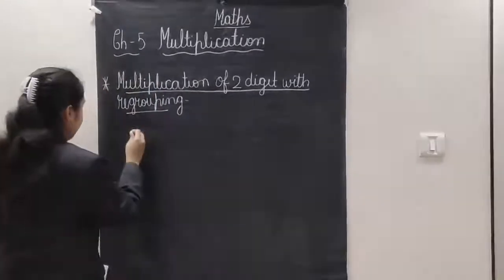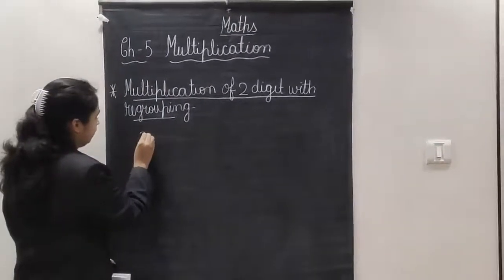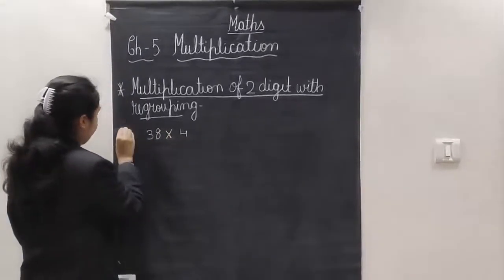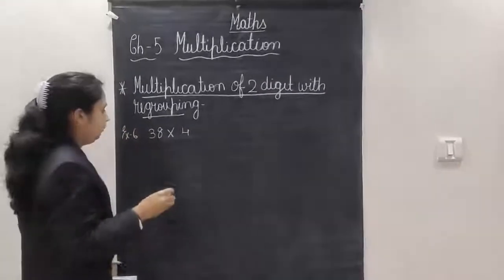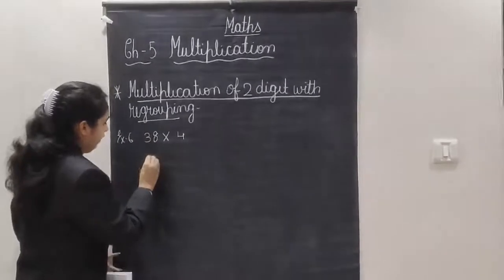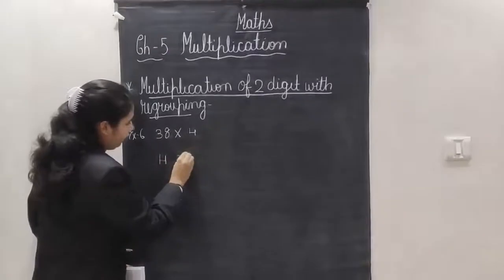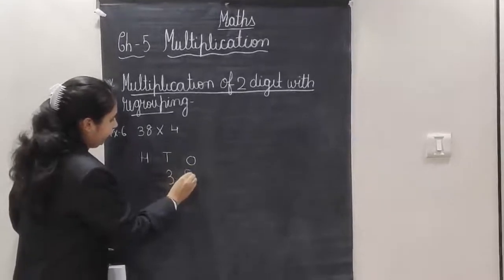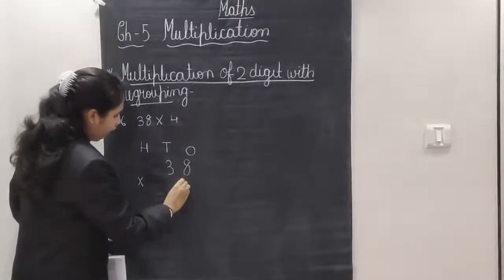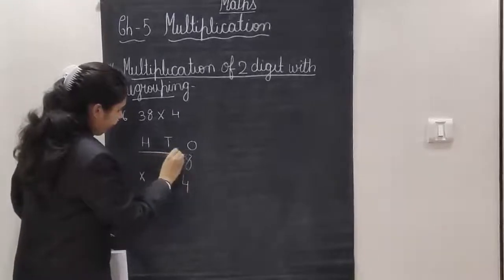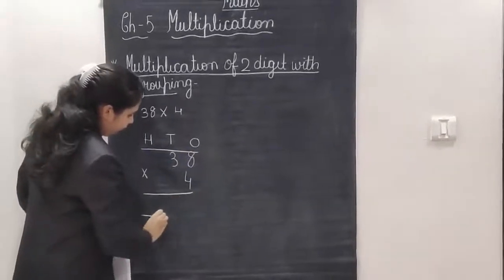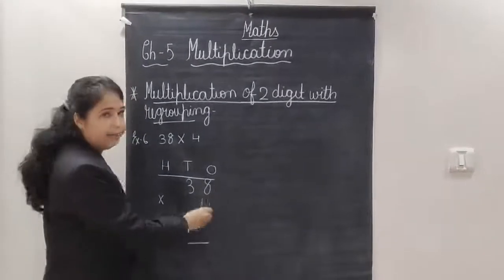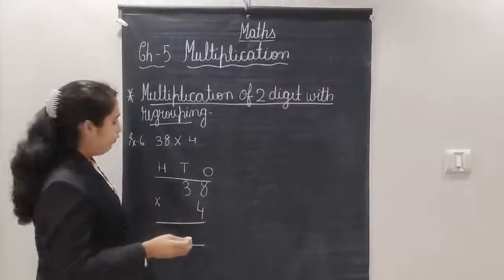So first of all, here is my question which is 38 multiplied by 4. I will write hundreds, tens and ones and I will put my number 38 multiplied by 4. Now the first step, as always we are starting from the ones place.